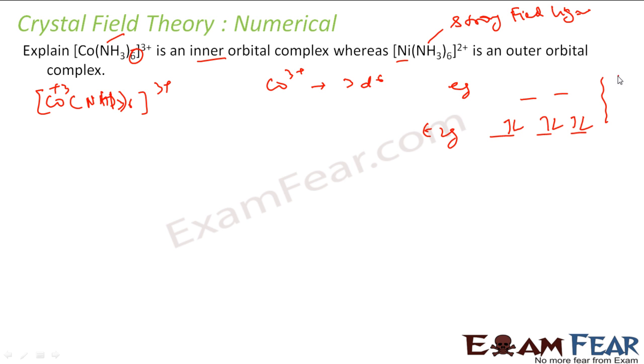Because delta naught is large, right? And it's 6. Since this is the case, we can see that now if you form the complex, these two d orbitals will be used. It's called an inner orbital complex. The other ligands will form bonds with this.